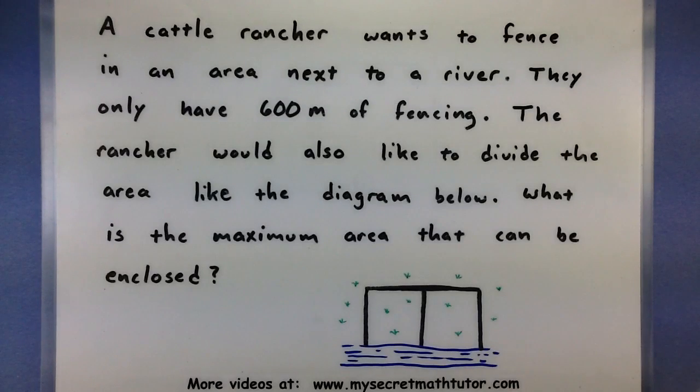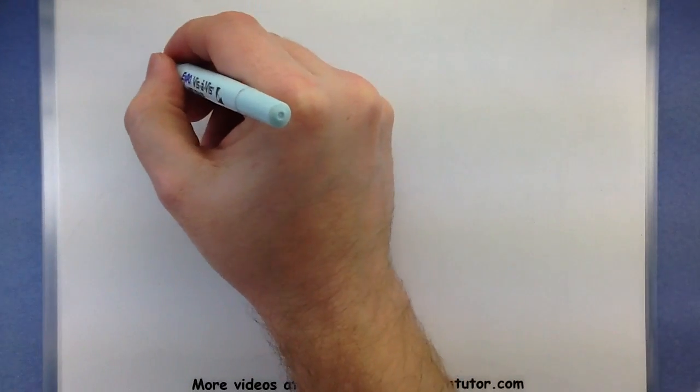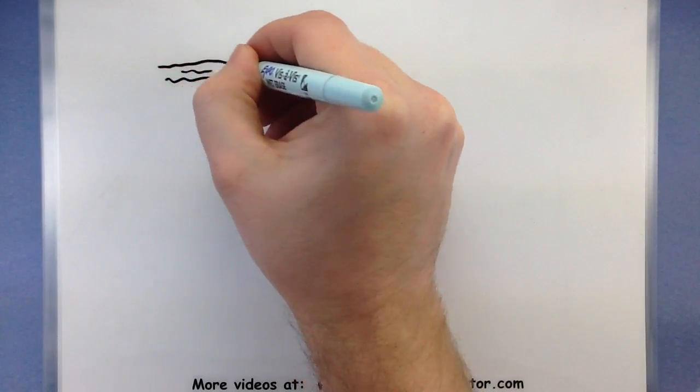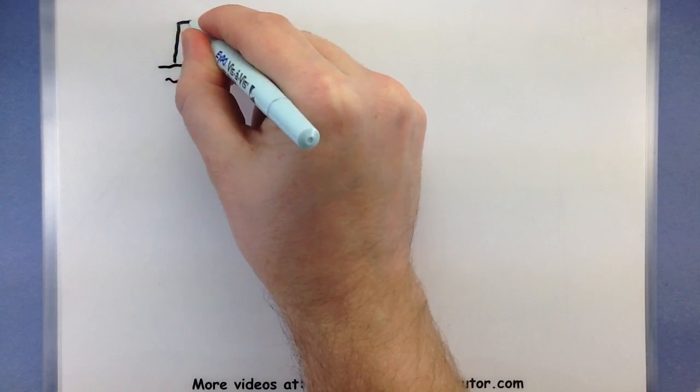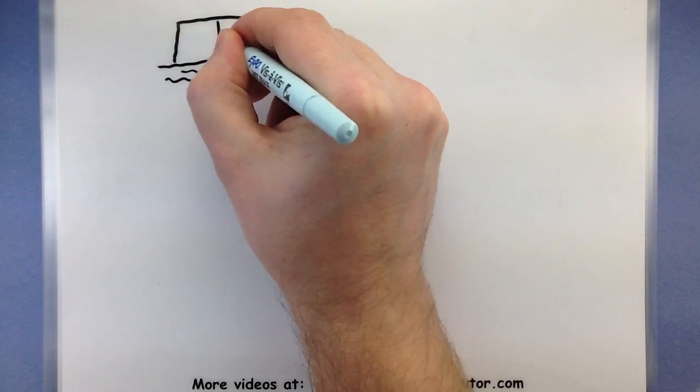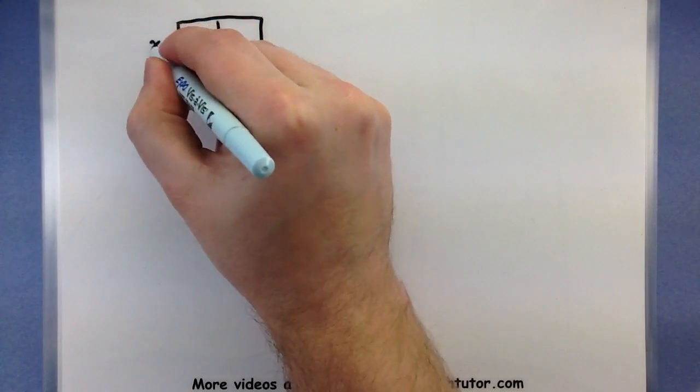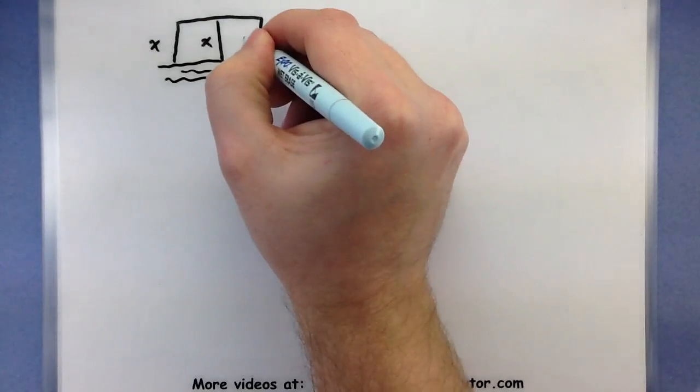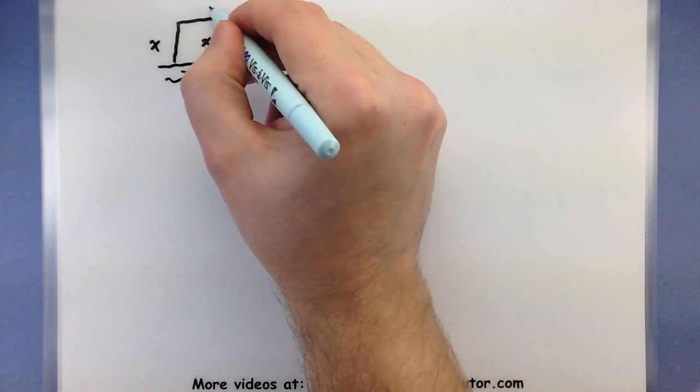So let's work on this problem a bit and see how we can set it up and actually find out where the formula negative b over 2a comes into play. When looking at this setup, I have some sort of river. Of course we are enclosing it in this fenced area. So we might call these little short pieces x and maybe the long one we will call y.